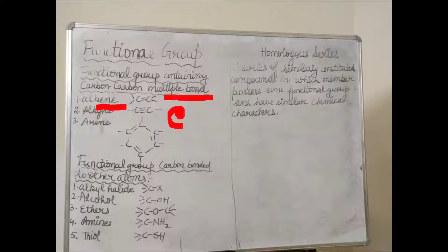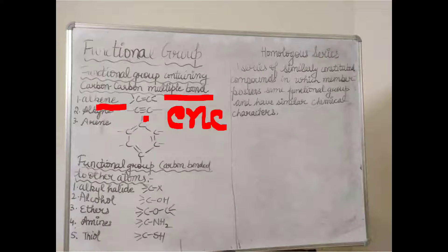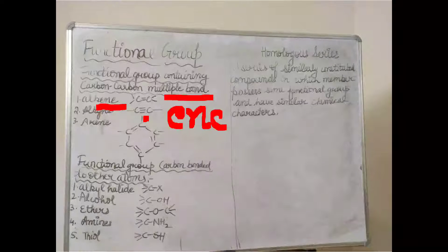The '-ene' word represents alkene. And if it is alkyne, it means a triple bond is there. And if it is arene, that means benzene — we are talking about the benzene ring. Now what about functional groups where carbon is bonded to other atoms?